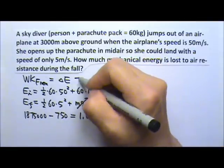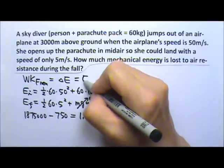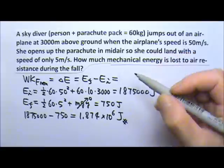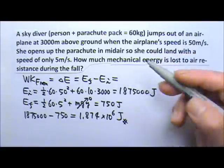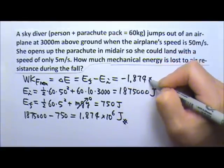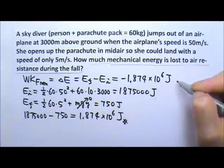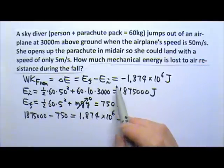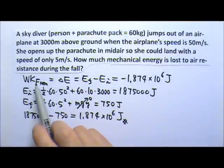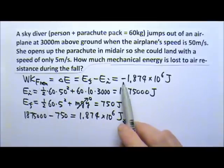Or, of course, we can just use that equation. The delta E is the final minus the initial. Of course, if you plug in the final minus the initial, what you're going to get is negative 1.874 times 10 to the 6 joules. This is negative because the work done by the air resistance is negative because the air resistance takes energy away.